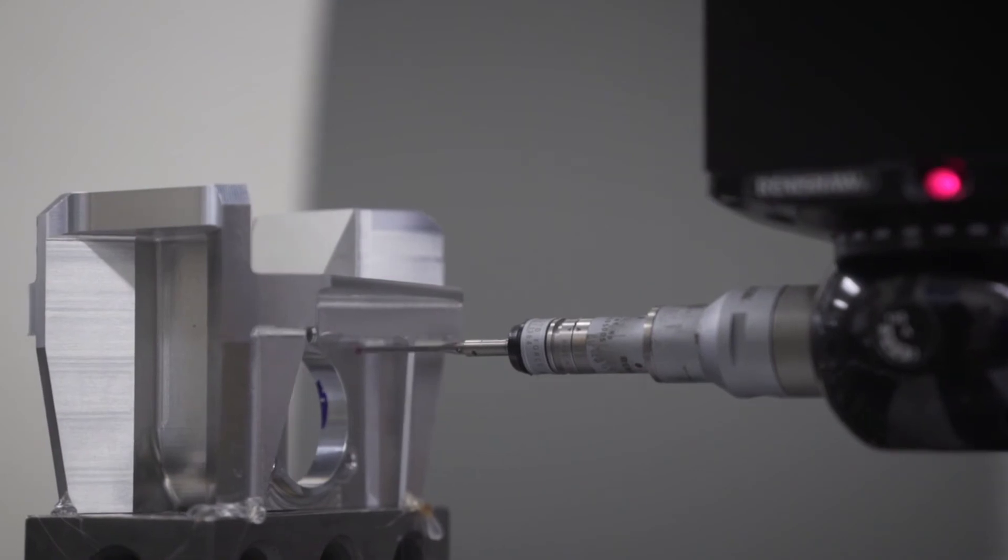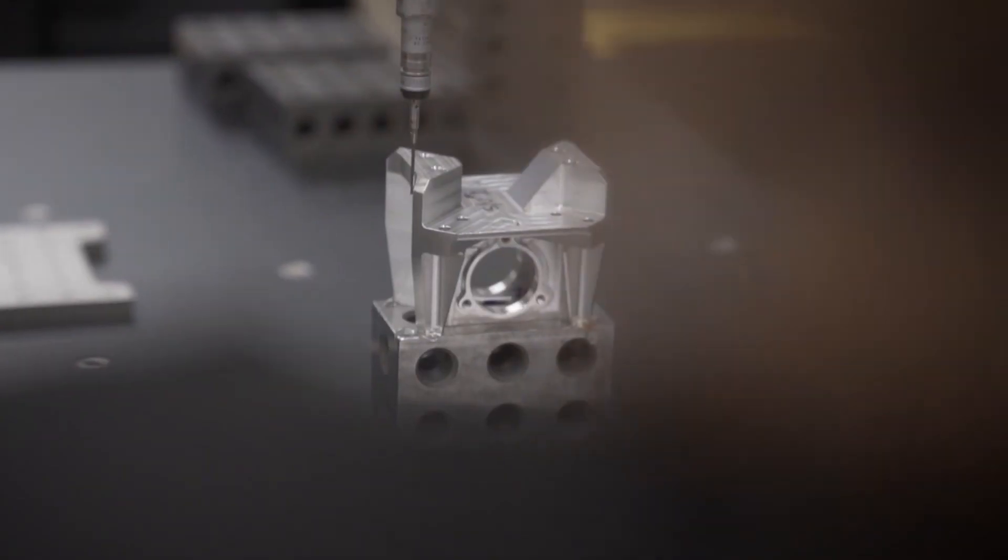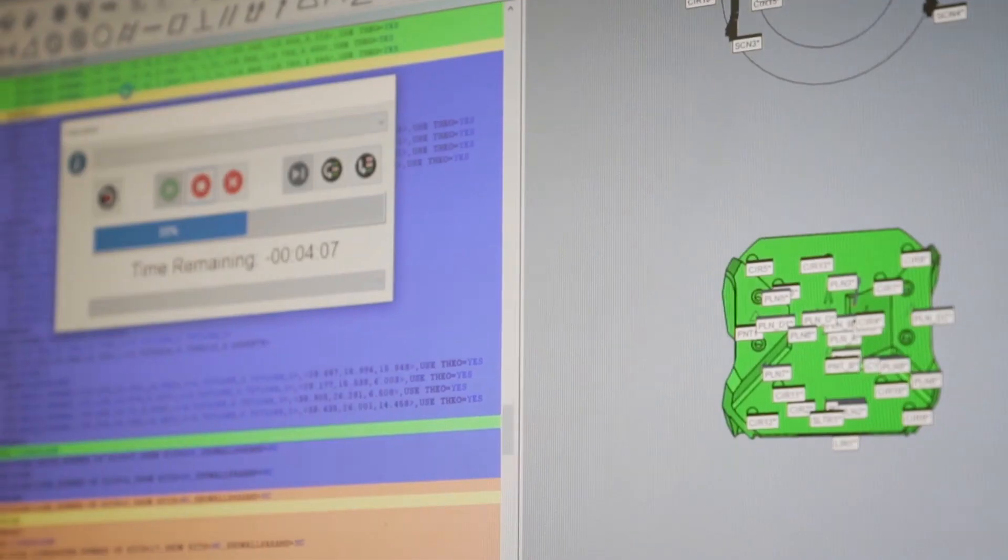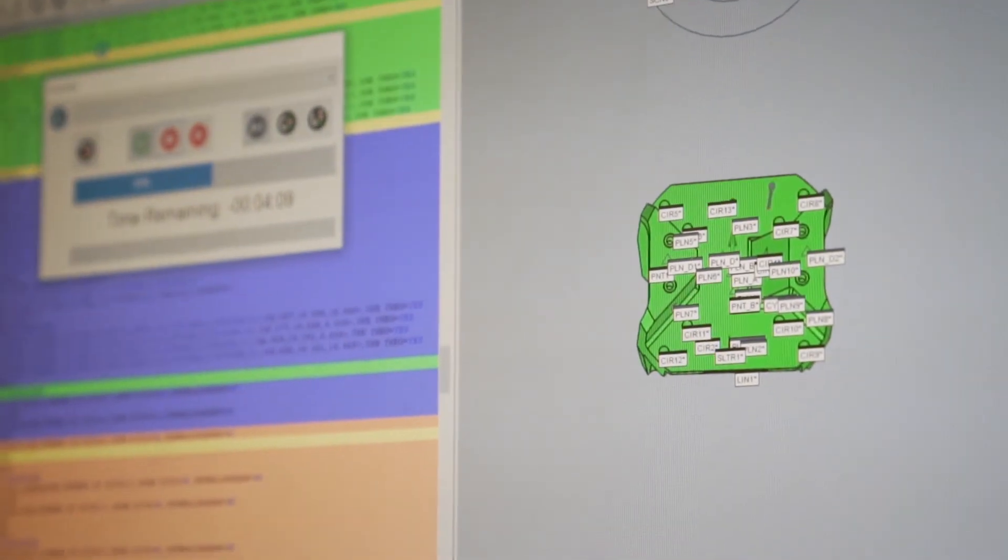We are competing in a space against fewer competitors because of the work that we're doing. It's more complex, more difficult materials. They're very lightweight parts. We'll start off with a part that might weigh 90 pounds, and when we're done, it weighs less than five pounds. We provide a high level of service from start to finish.